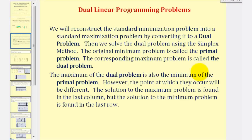To solve a standard minimization problem, we reconstruct it into a standard maximization problem by converting it to what's called a dual problem. Then we solve the dual problem using the simplex method. The original minimum problem is called the primal problem, and the corresponding maximum problem is called the dual problem. The maximum of the dual problem is also the minimum of the primal problem; however, the point at which they occur will be different. The solution to the maximum problem is found in the last column, but the solution to the minimum problem is found in the last row of the same tableau.